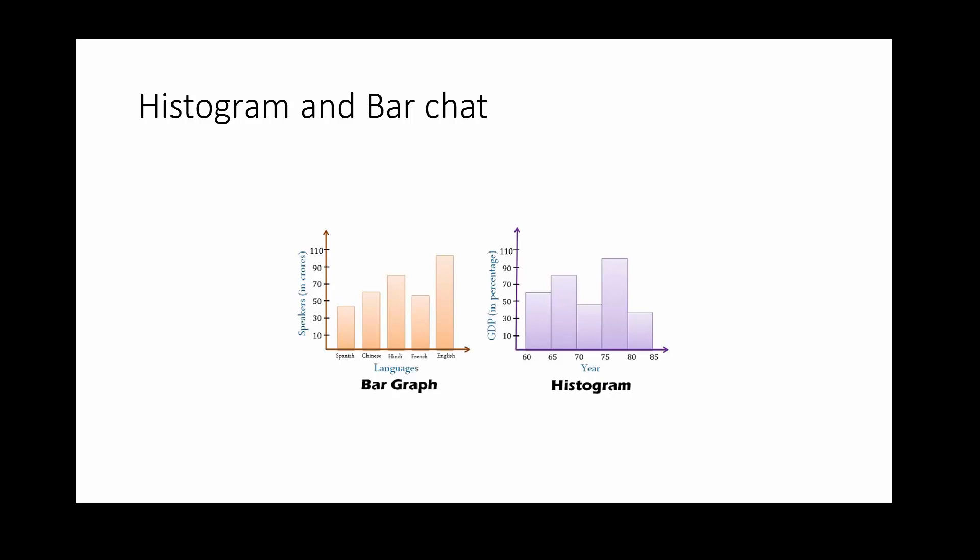Both are used for visualization of data. We really want to see the distribution of the data. We can use bar chart or histogram. There are certain things to know. Histogram is used for quantitative data whereas bar chart or bar graph is used for qualitative data or categorical data.